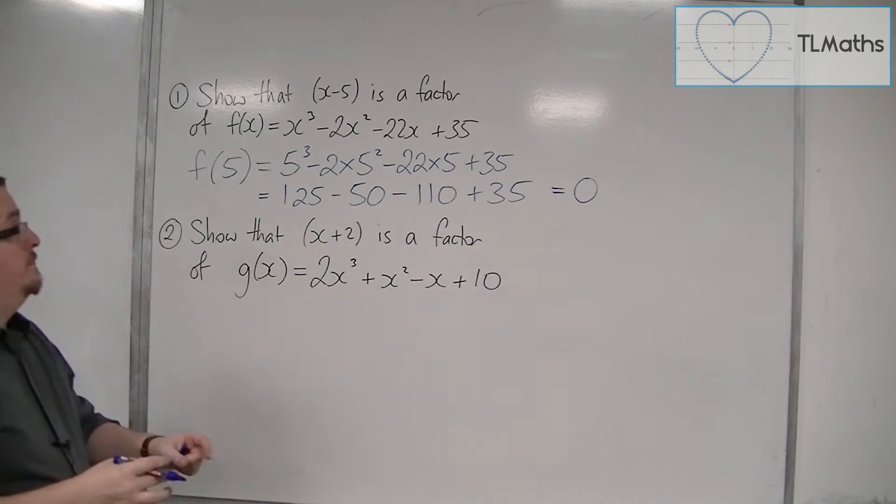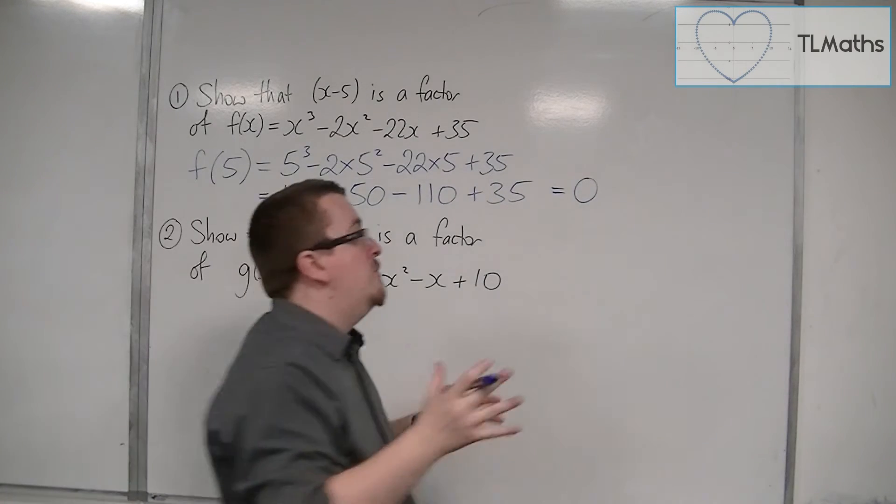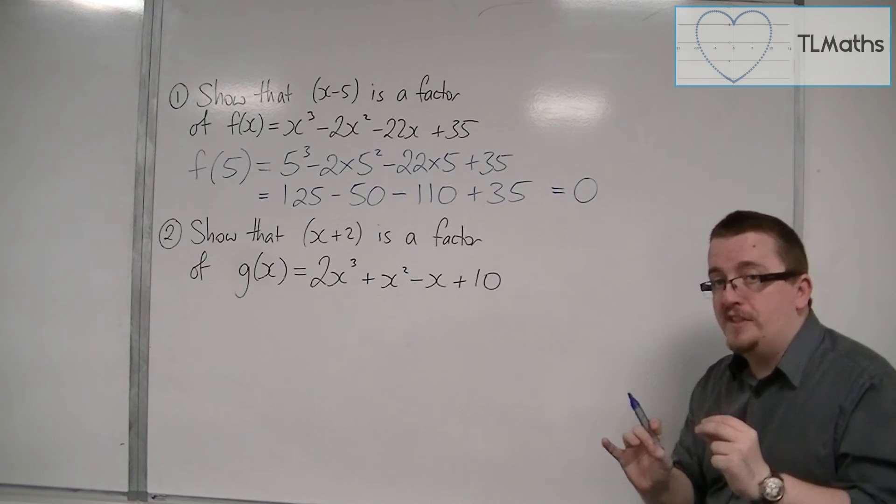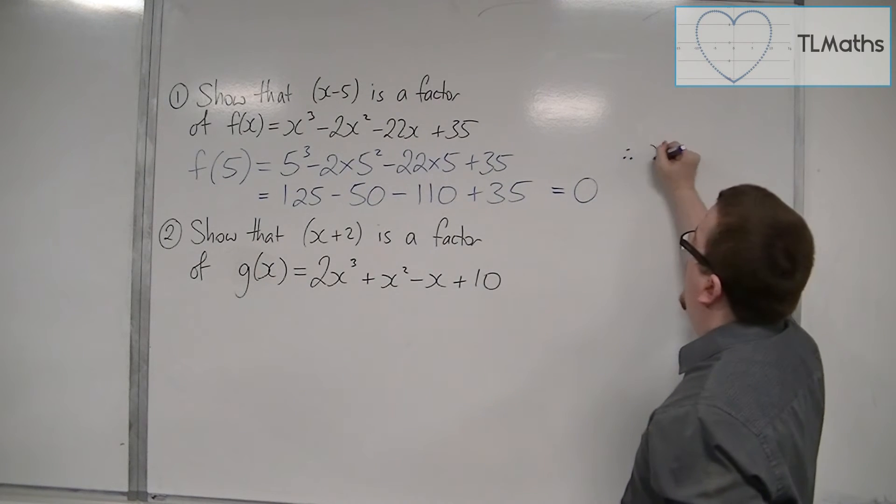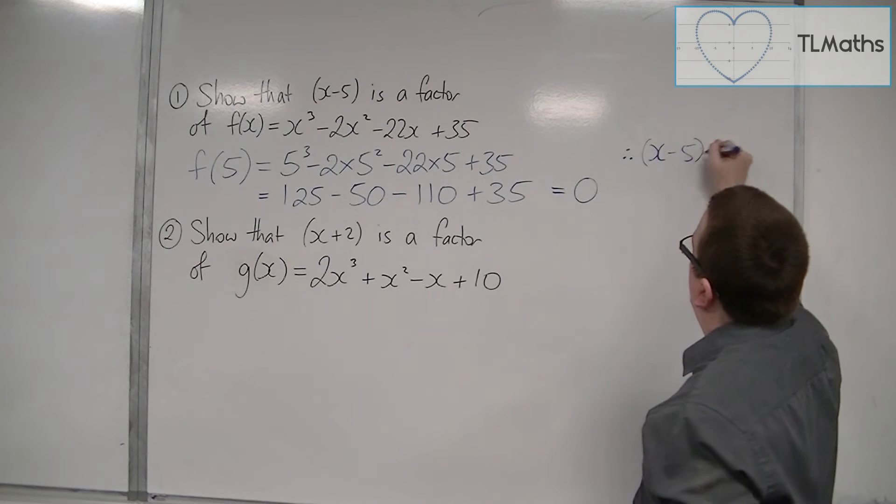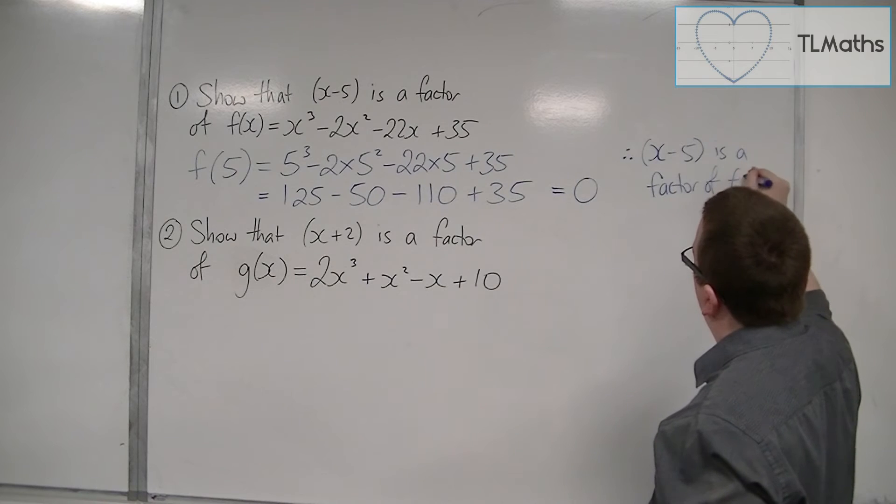Now, because f(5) is equal to 0, we want to write down a concluding statement. Therefore, x minus 5 is a factor of f(x).